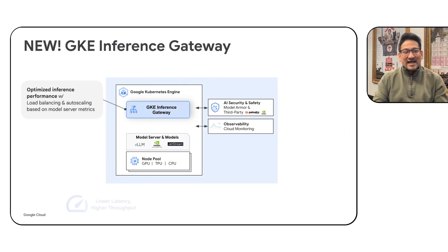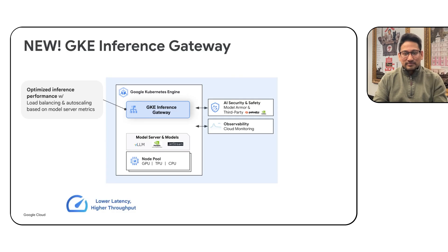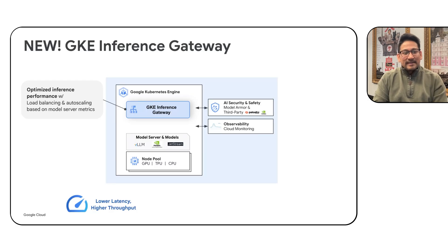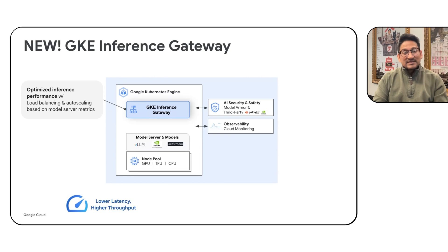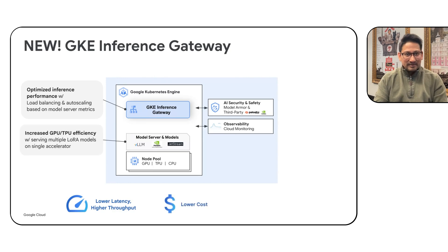First, we have enhanced the load balancing algorithm in GKE Gateway, tailored towards the unique requirements of serving LLM workloads. We can also auto-scale based on metrics coming from the model servers, which allows you to better allocate optimal compute capacity without impacting performance. These enhancements allow you to obtain lower latency serving, giving your users a more snappy and better user experience, as well as high throughput and token generation.